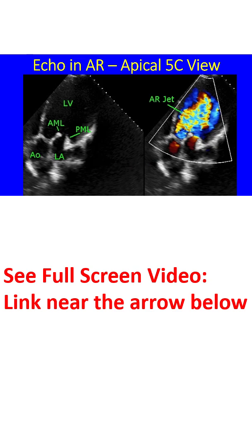When there is associated mitral stenosis, the color Doppler jet of mitral flow merges with that of aortic regurgitation in the left ventricle, as both occur in diastole. But the velocity of the aortic regurgitation jet is much higher than that of mitral stenosis, as the pressure difference between the aorta and left ventricle in diastole is much higher than that between the left atrium and left ventricle.